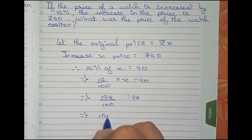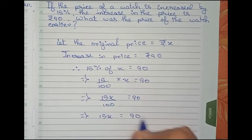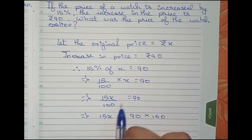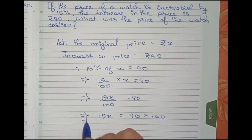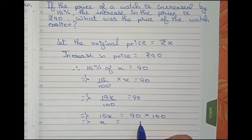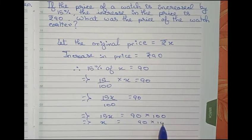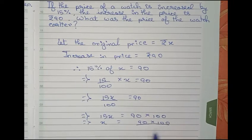Or 15x equals to 90 into 100. We are taking 100 from left side to right side, so it goes for multiplication. So now, x equals to 90 into 100 by 15.